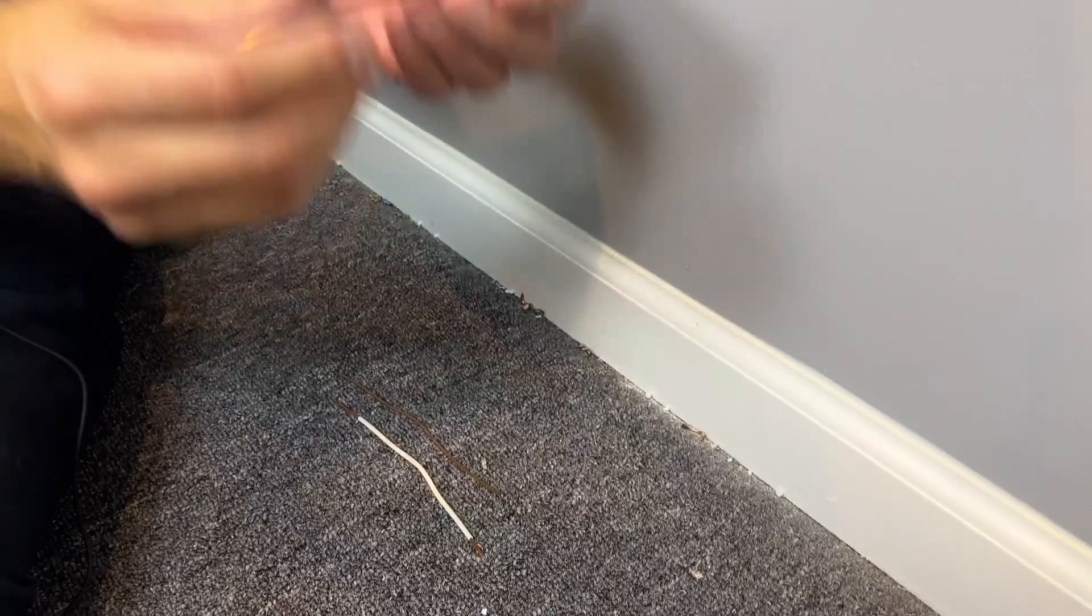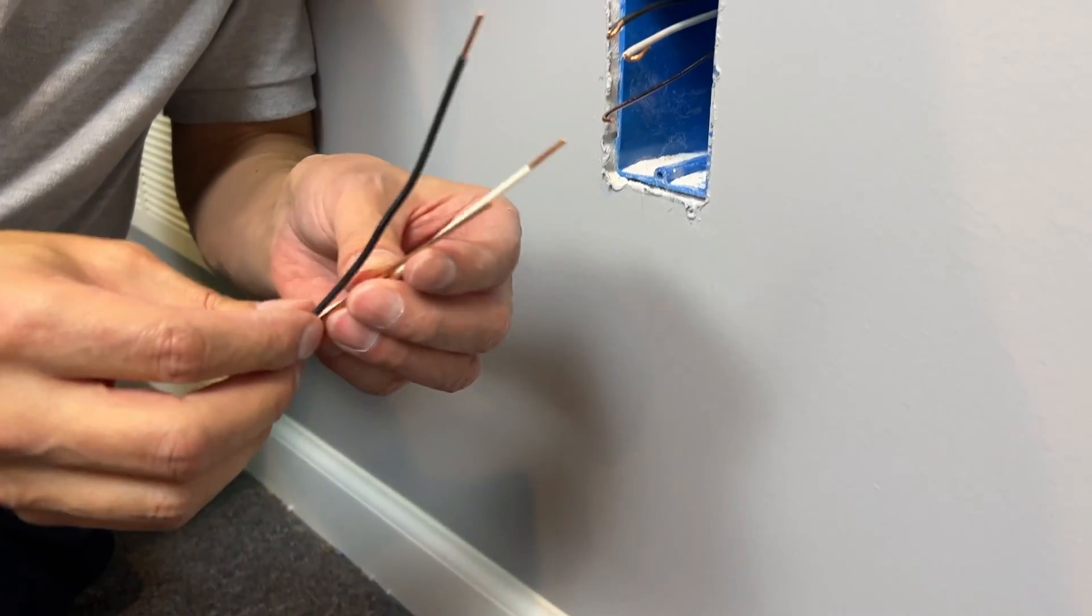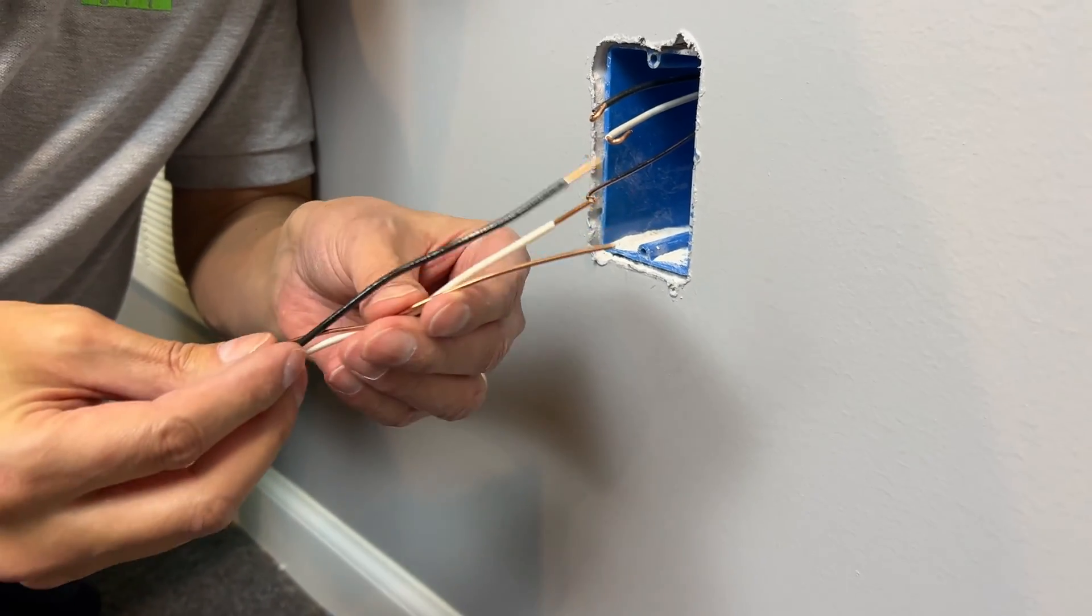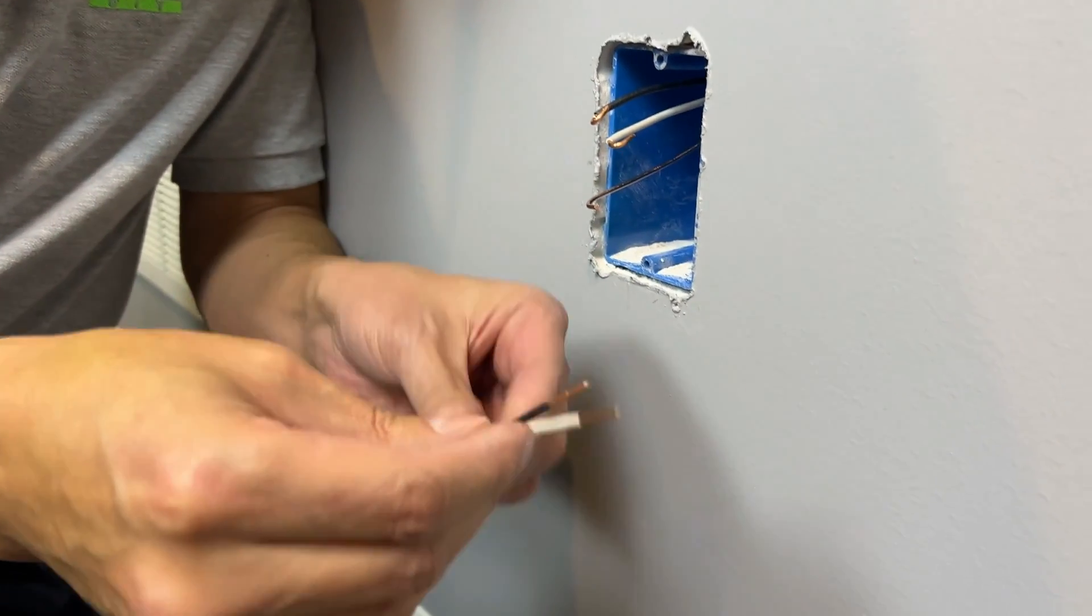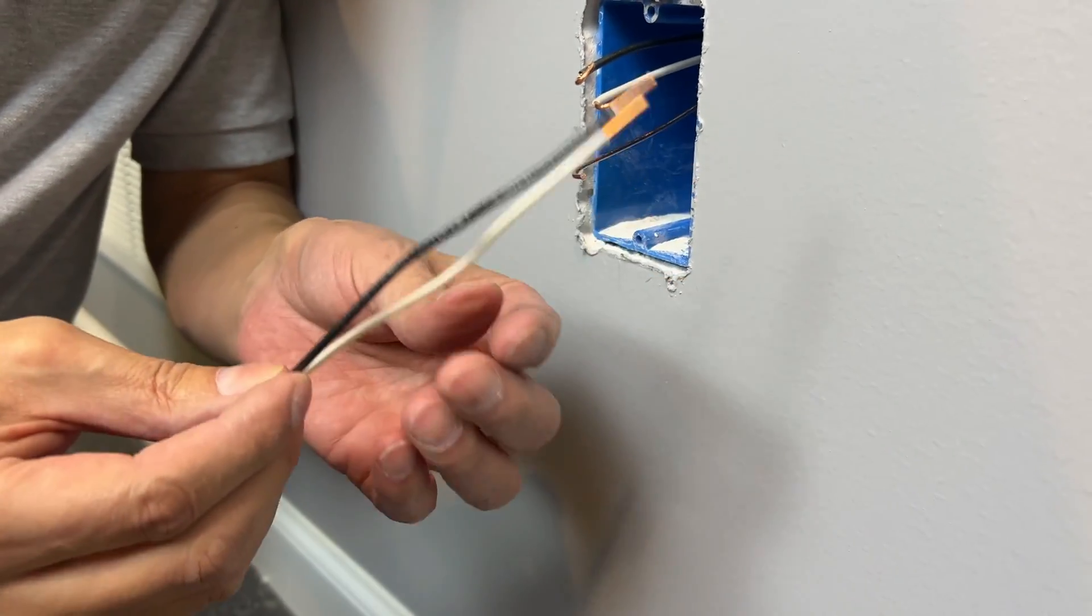The first thing you can do is pre-cut your wire length. So here we have six inch extenders. I like to pre-cut them and then actually pre-strip them so you're ready to go with your extenders.